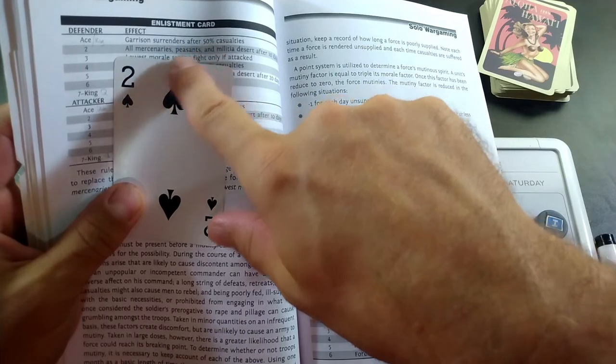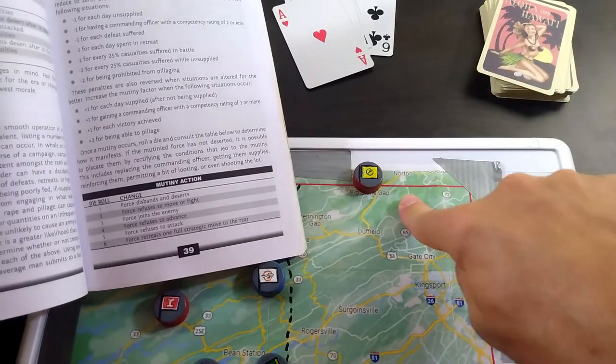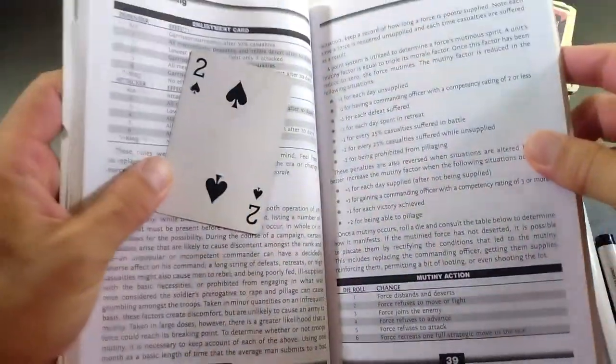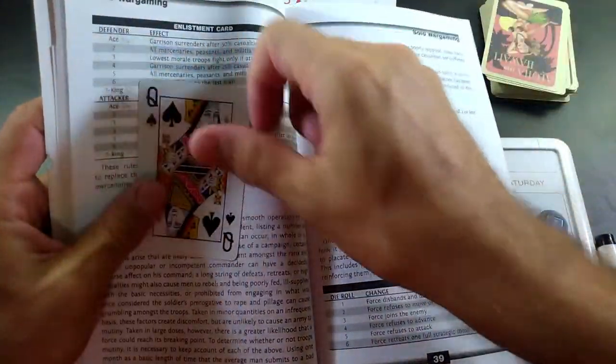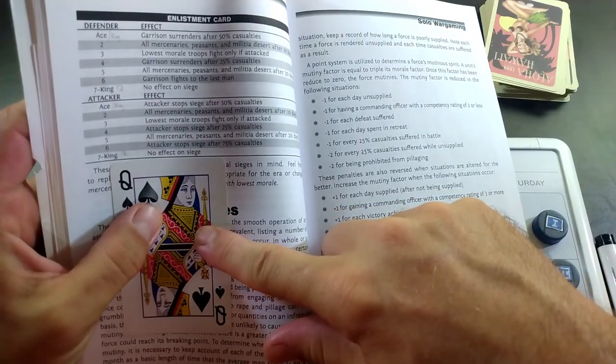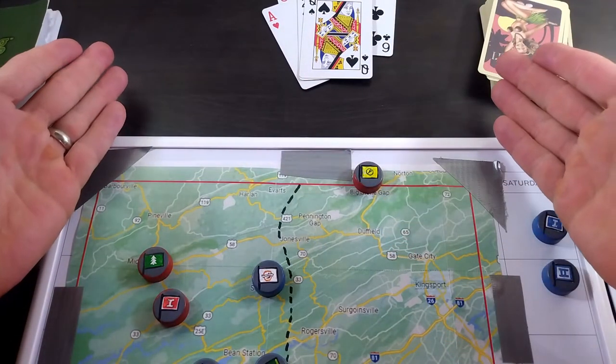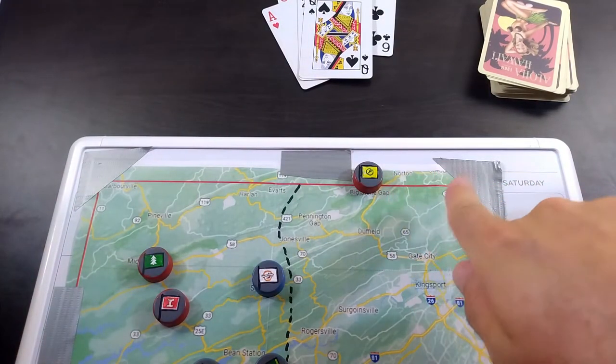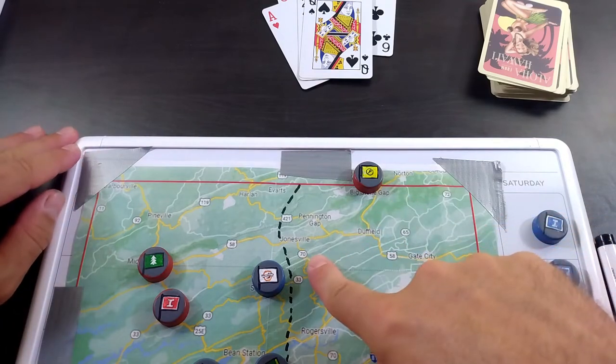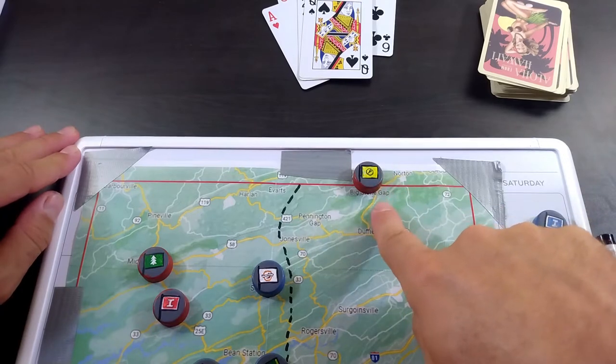On day 10, now bear in mind, our siege has gone on for 8 days at this point. They will have lost 30 soldiers, or 30 of their militiamen, to the siege. Then we have to worry about enlistment. We draw one for, and we'll do the defender first, and then the attacker. One for the defender. The defender with a 2, all the mercenaries, peasants, and militia desert after 10 days. I believe it is... The garrison surrenders after 50% casualties. The mercenaries, peasants, and militia. Which, in this case, it is only the militia defending. If we had regular troops, they would be okay. But, in this case, on that day, the defenders surrender. We draw a queen for the attackers, and there's no effect on the siege. So, on day 10, the siege will end. You just draw 3 cards, and you know that the siege lasts 10 days. That will be on October 9th, if they are left undisturbed and unmolested.